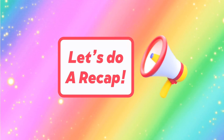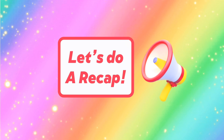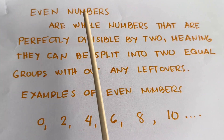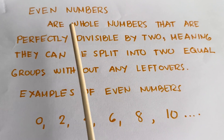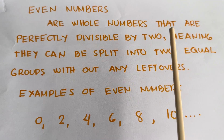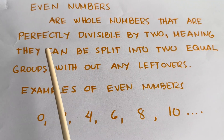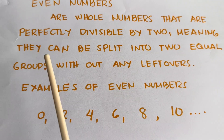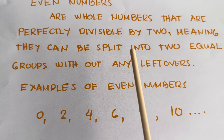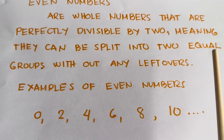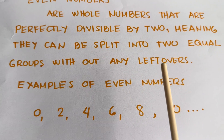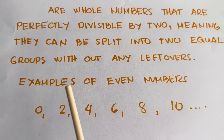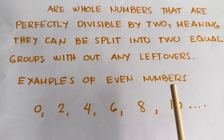Now join me and let's do a recap. Even numbers are whole numbers that are perfectly divisible by 2, meaning they can be split into two equal groups without any leftovers.